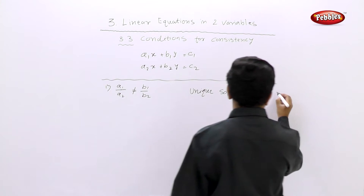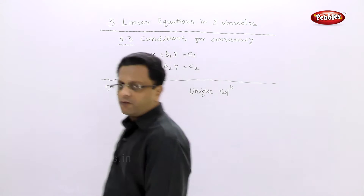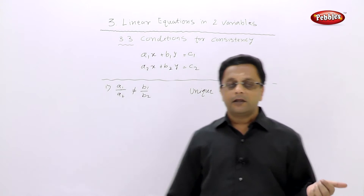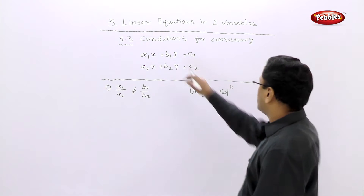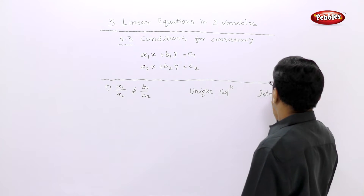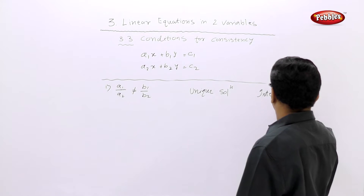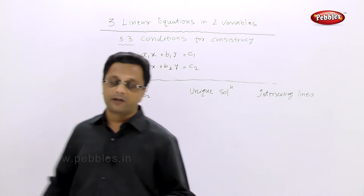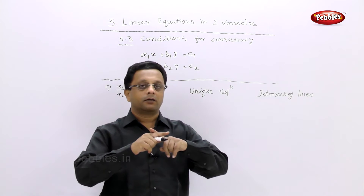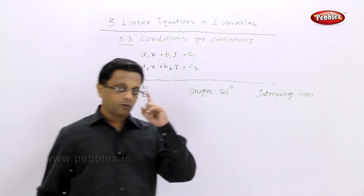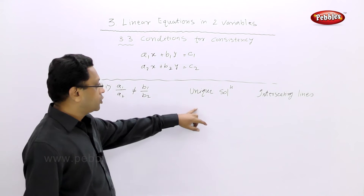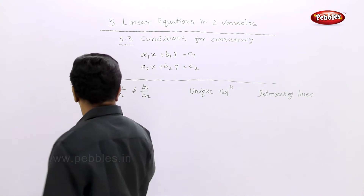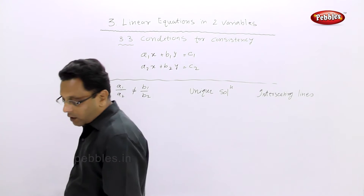That means you will get only one value of x and one value of y. Since each equation represents a line — a linear equation in x and y is the equation of a line — these two lines are intersecting lines. As we have seen in the graphical method, two intersecting lines meet at only one point, so the solution is unique.